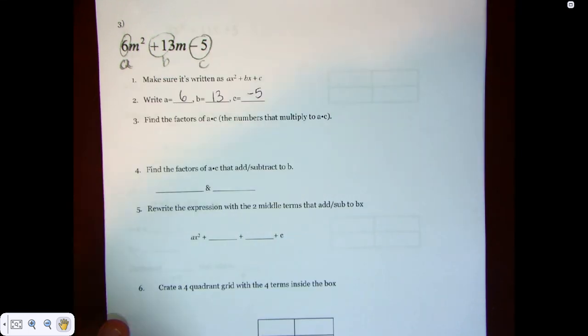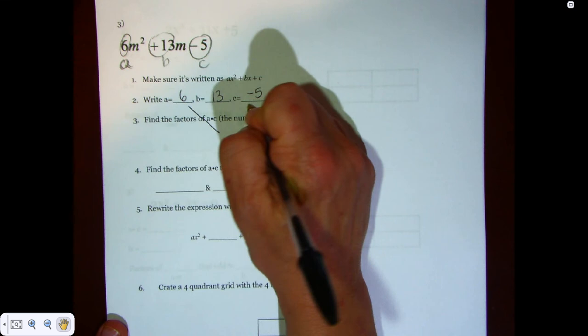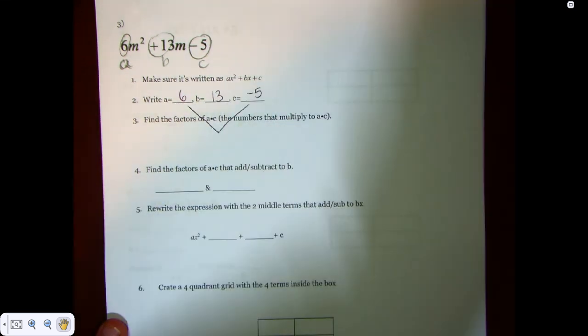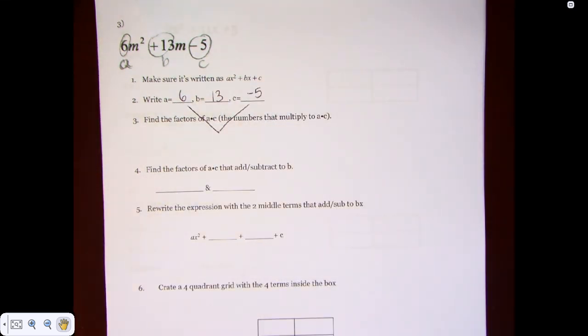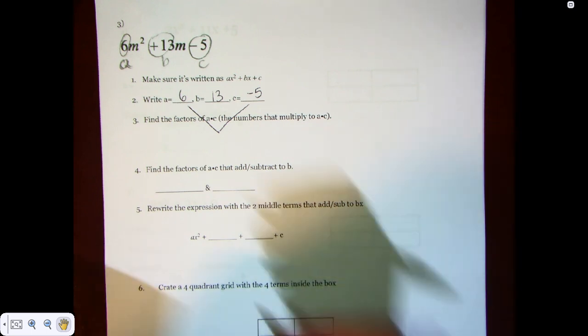What are the factors of A and C? So in this case we want to do 6 times negative 5, and that's negative 30.